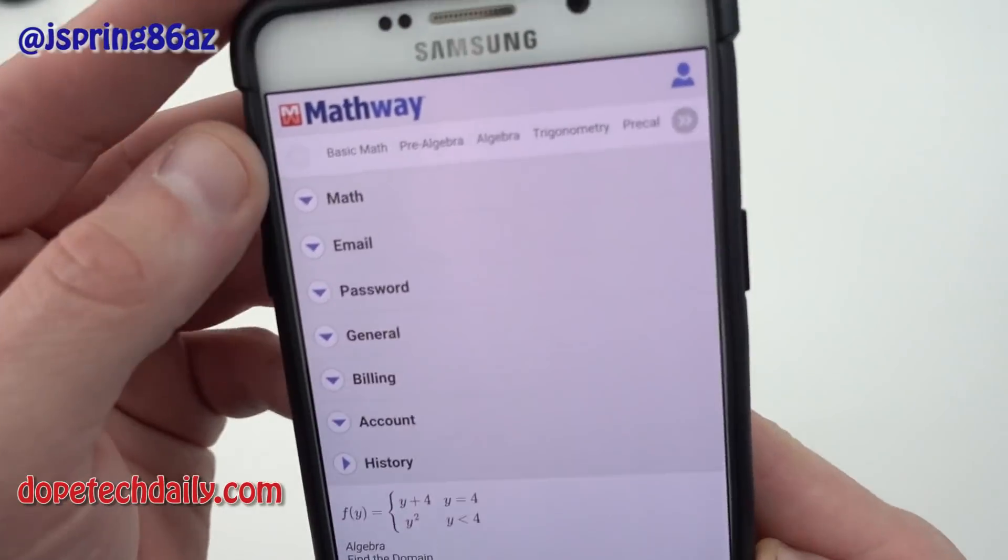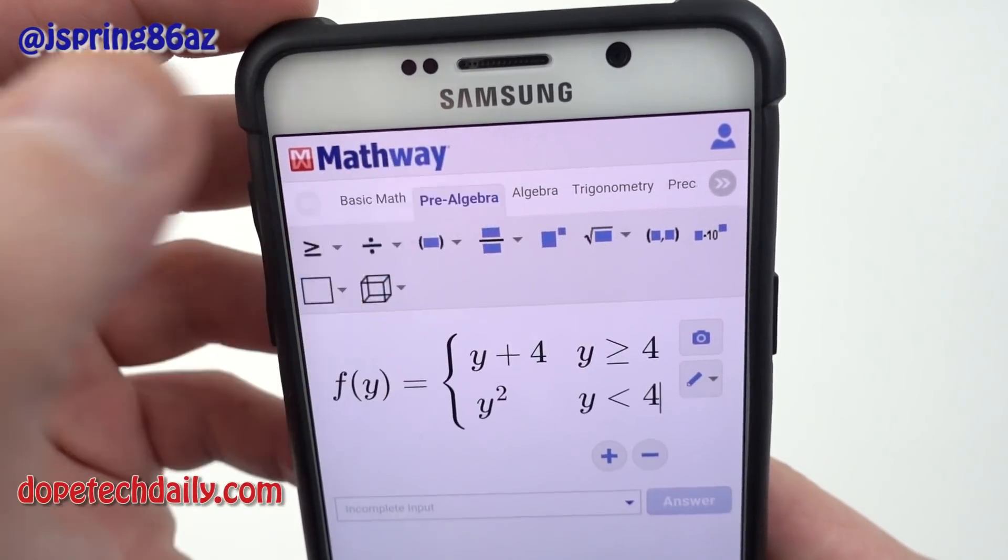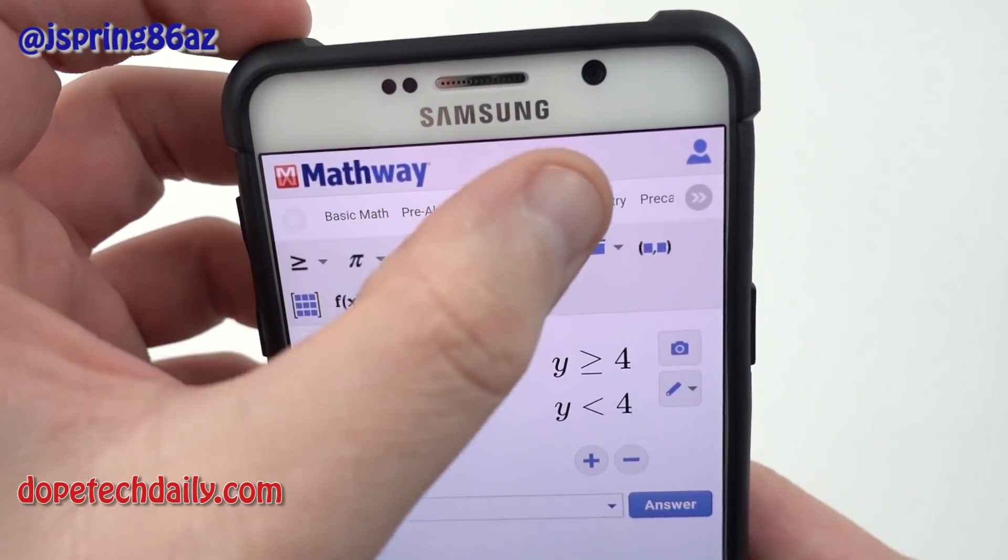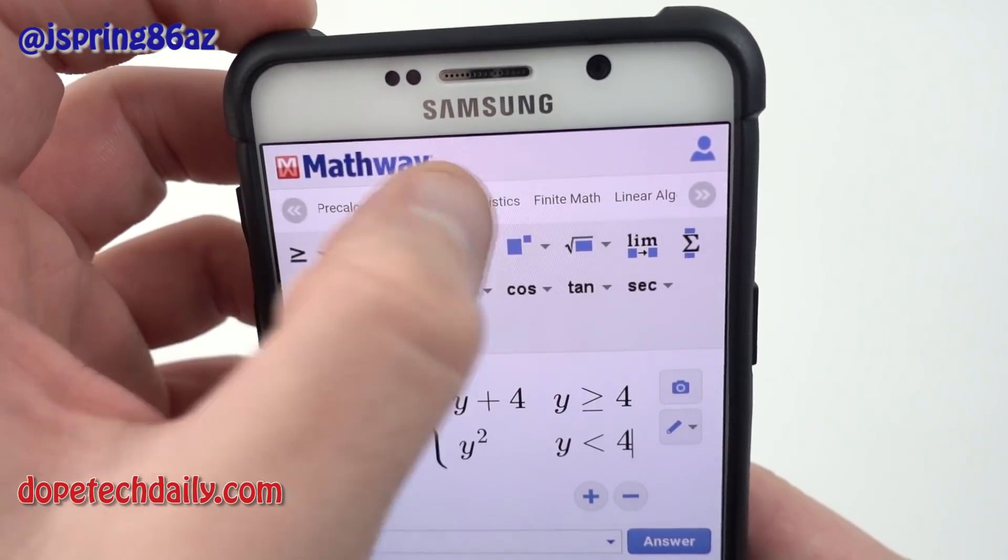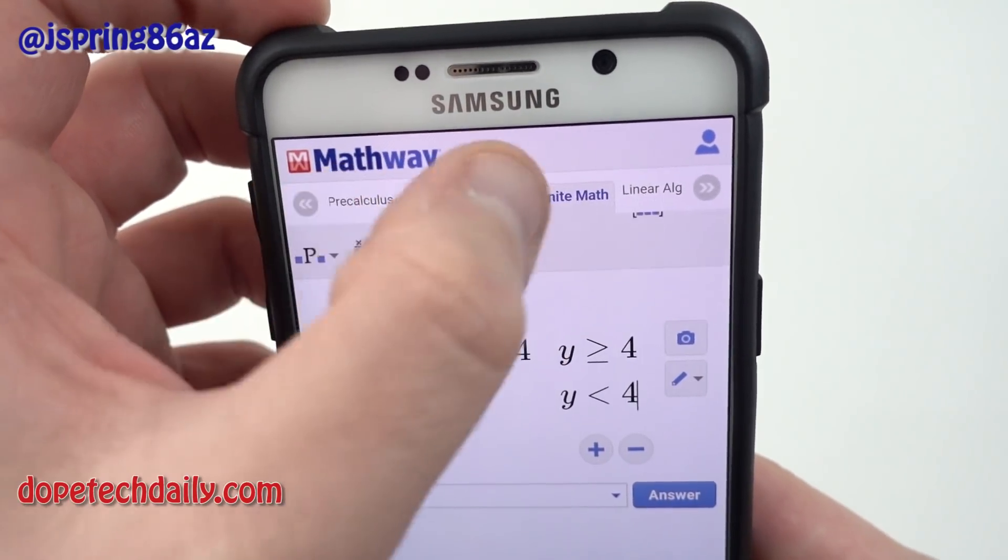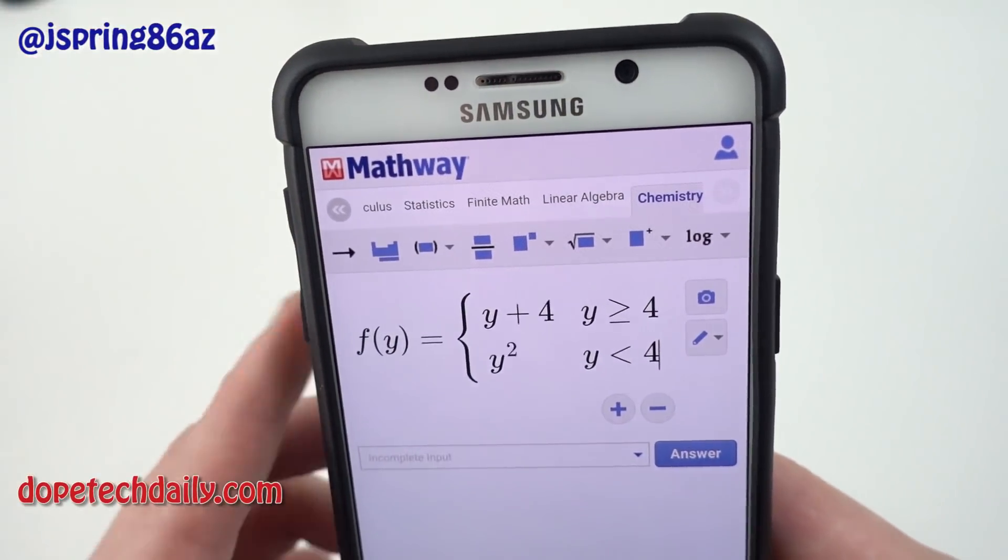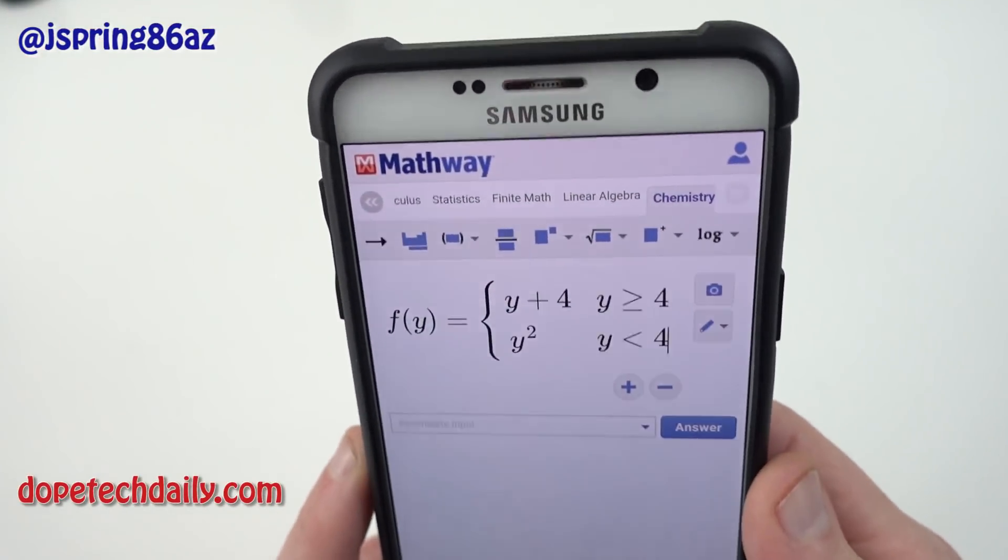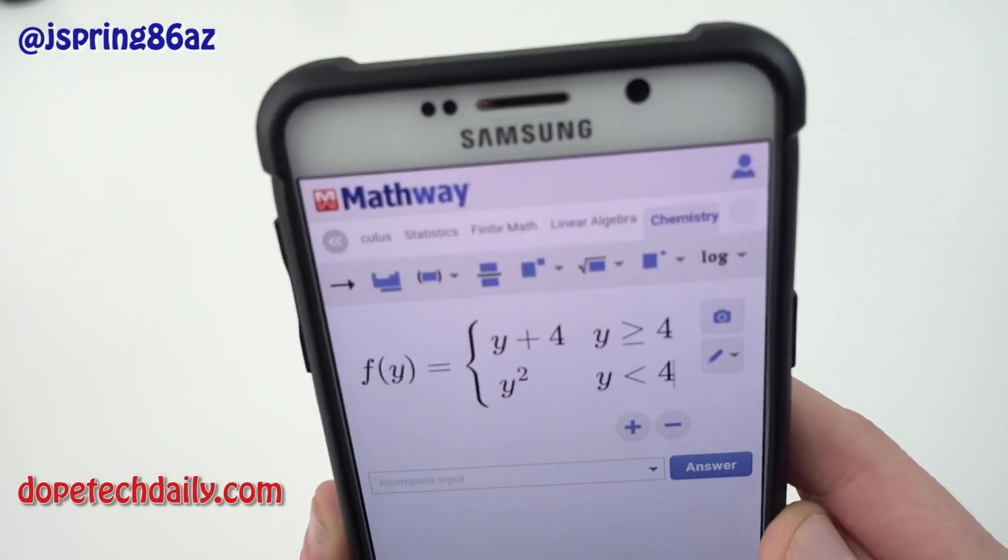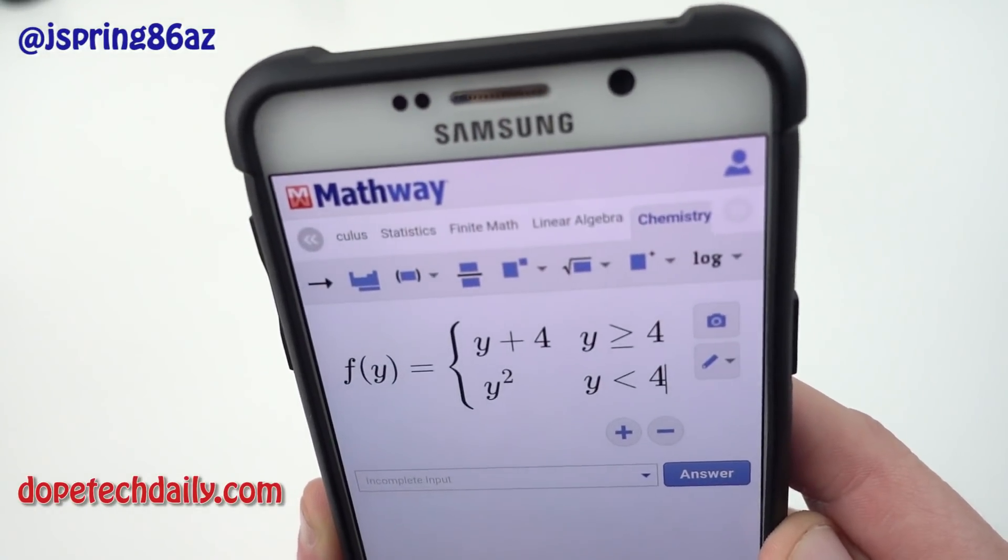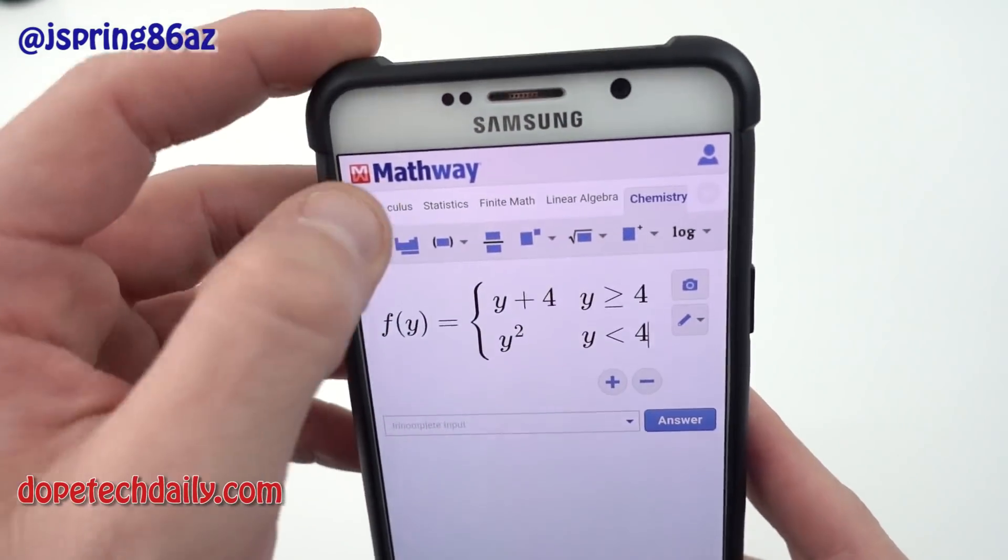So quickly you can see across the top just a tour of what they have. You can see we've got basic math across here, pre-algebra, algebra, trigonometry, and if we scroll pre-calculus, calculus, statistics, finite math, linear algebra, and even chemistry. For those of you taking chemistry you need to do some molecular mole conversions and those sort of things with Avogadro's number. All of you chemistry students out there know exactly what I'm talking about or I hope you do but that's exactly what you can use the app for right there at the top.